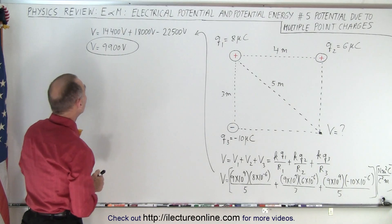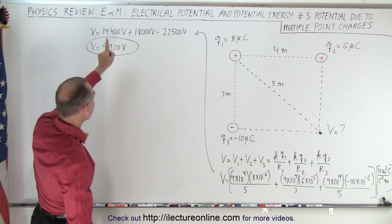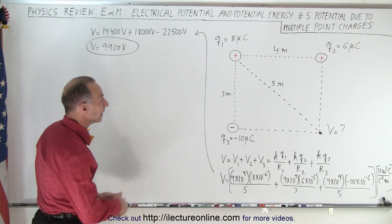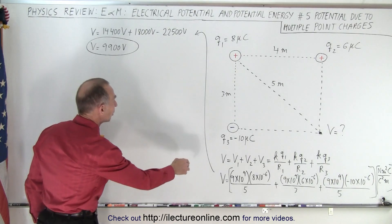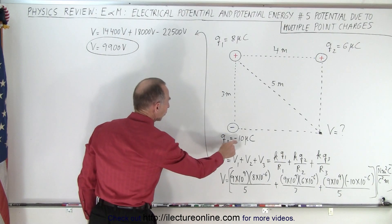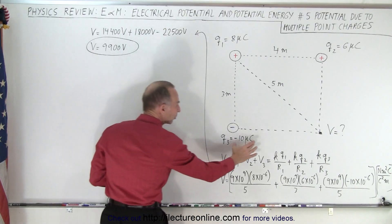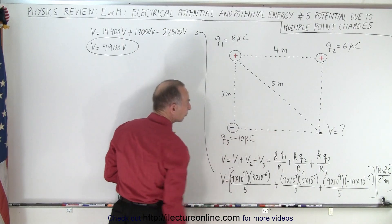Then if we calculate each of the voltages, notice we have 14,400, 18,000, and then a negative 22,500 for the third charge. The voltage is a little bit bigger in magnitude because it's a bigger charge and it's only four meters away.